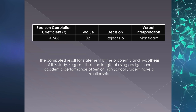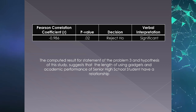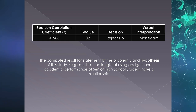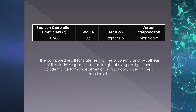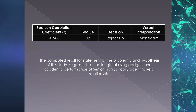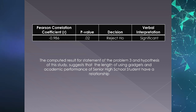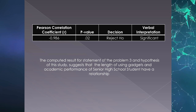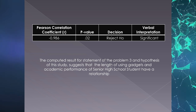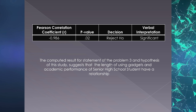Table 5 shows the correlation between the length of using gadgets and academic performance using the Pearson R formula, which equals negative 0.986. This indicates a very strong negative relationship between the length of using gadgets and academic performance of senior high school students. This means that when the time of playing online games increases, academic performance decreases, and vice versa. The correlation is significant since the p-value is less than 0.05. We reject the null hypothesis. Therefore, there is a significant correlation between the length of using gadgets and academic performance of senior high school students.